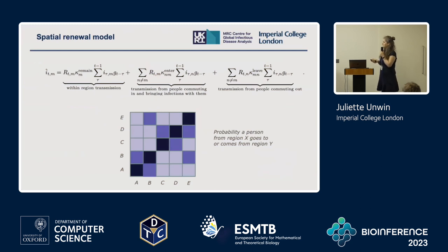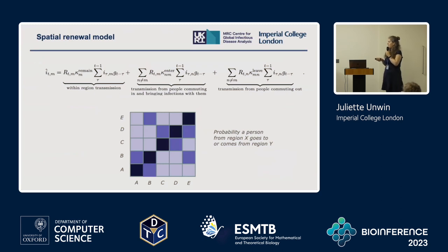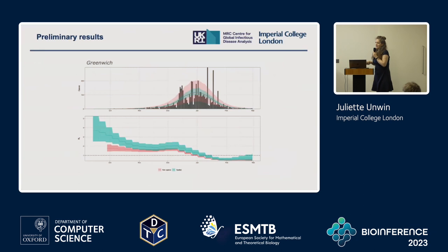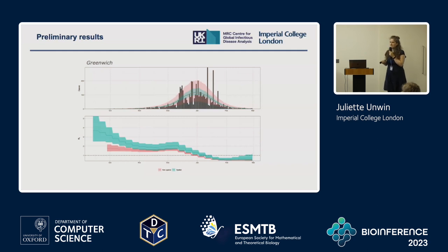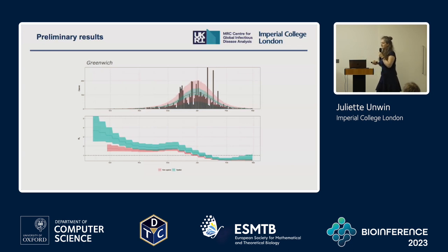We can parameterize this model using kappa—the probability a person goes to each region—from mobile phone data. It's very likely a person in region A stays in region A, but there's some likelihood they travel to B and less that they travel to C, D, and E. Here are some preliminary results showing the beginning of the Alpha wave for Greenwich, comparing a non-spatial model in red and a spatial model in blue. I wouldn't say too much about the differences—the spatial model is preliminary research and I'm not sure it's seeded quite right.